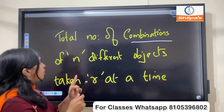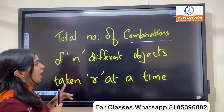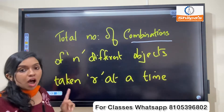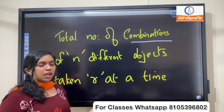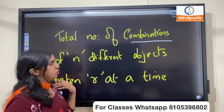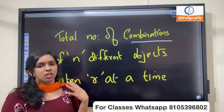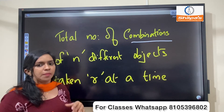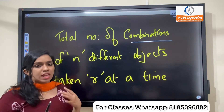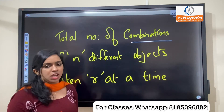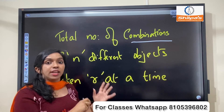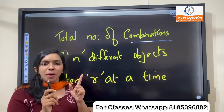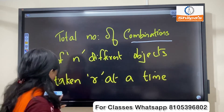So, the total combination of n different objects taken r at a time. We are looking for 10 objects to remove and select — looking for combination and permutation.